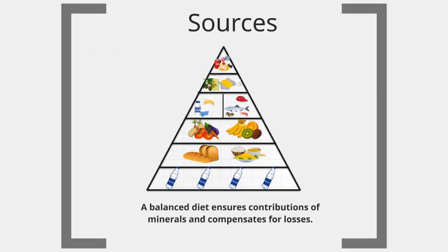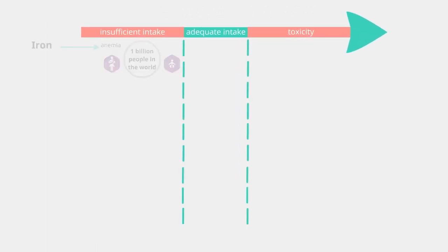As with vitamins, a balanced and varied diet ensures contribution of minerals and compensates for losses. However, deficiency in iron leads to reduced physical performance, decreased learning ability, and in the case of large deficiency, anemia has been observed in 1 billion people around the world, particularly in childbearing women and preschool children.